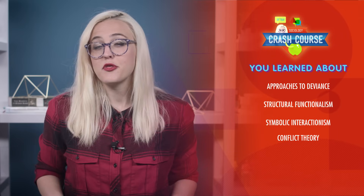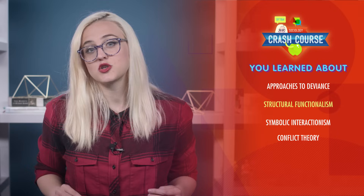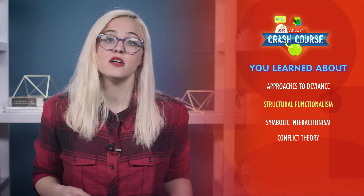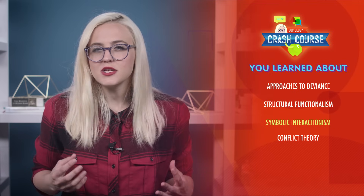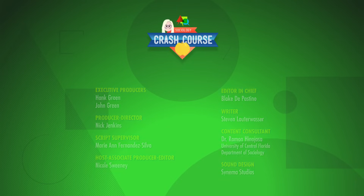Today we learned about how the three major paradigms in sociology approach deviance. We talked about structural functionalism and how deviance can fulfill a function in society. Then we turned to symbolic interactionism and looked at how deviance is constructed. Finally, we discussed conflict theory and how deviance is connected to power and inequality.